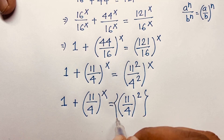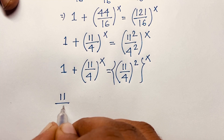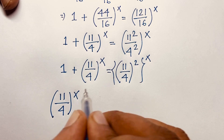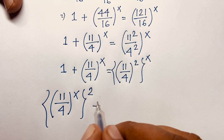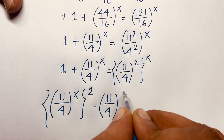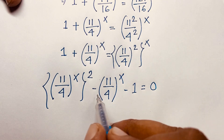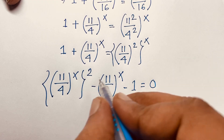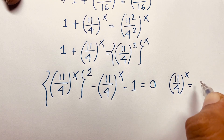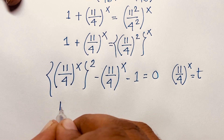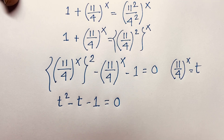Applying the exponent law, (11/4)^(2x) becomes ((11/4)^x)^2. So we have 1 plus (11/4)^x equals ((11/4)^x)^2, and rearranging gives ((11/4)^x)^2 minus (11/4)^x minus 1 equals 0. Let t equal (11/4)^x, so we get the quadratic equation t^2 minus t minus 1 equals 0.